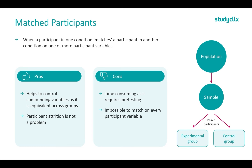It is also impossible to match on every participant variable. We are unique as humans and no two people are alike — they may match on certain characteristics but certainly won't match on every characteristic. People have different life experiences that can also be an influencing factor. It is also hard to have large sample sizes because we're looking for people that pair up, and it's impossible to match everyone with a partner, so we have to turn some people away. The larger the sample size, the more we have to spend and the more pre-testing we have to do.